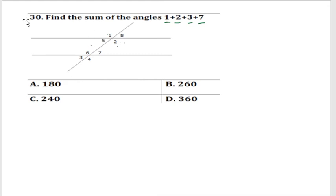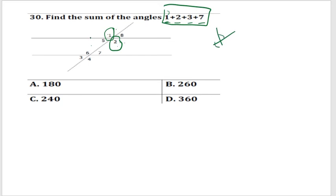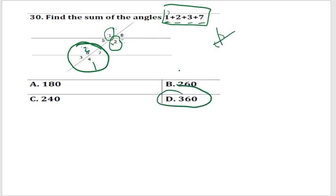The next question is geometry. It asks for the value of angle 1 + angle 2 + angle 3 + angle 7. Angles 1 and the opposite angle are equal because they are vertically opposite angles — when two lines cross, vertically opposite angles are equal. Similarly, angle 2 is congruent to angle 6. When we look at angles 1, 2, 3, and 7 together, they form one full circle. One complete circle is 360°, so the answer is 360°.